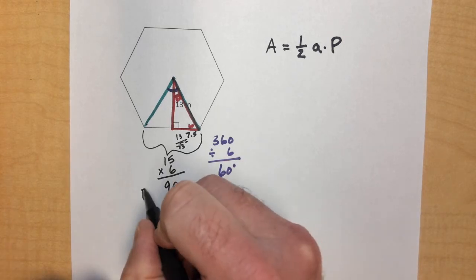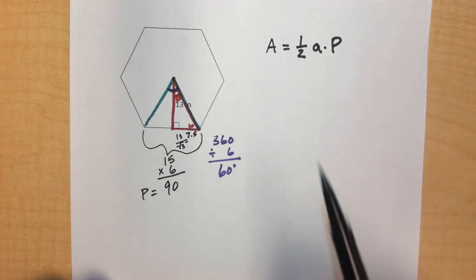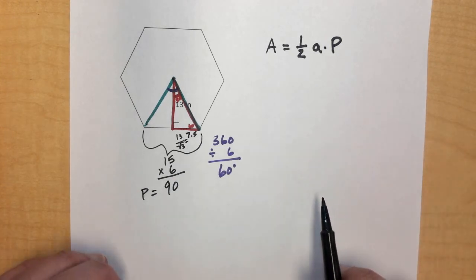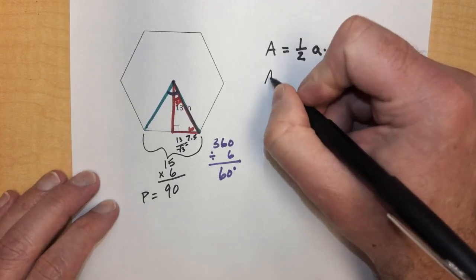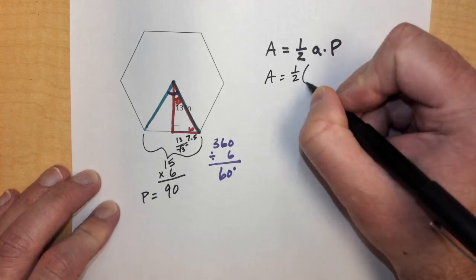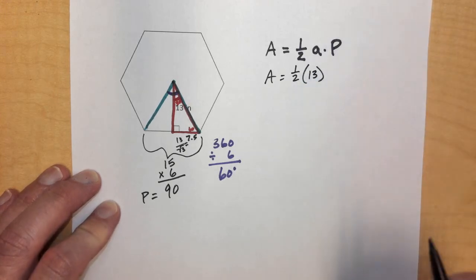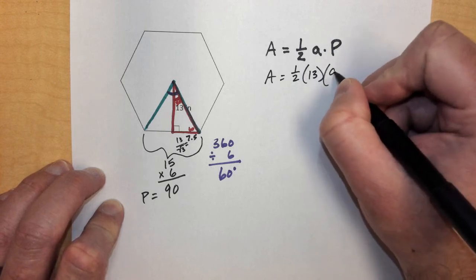So we found the perimeter. We know the apothem. Now we can plug all those numbers into our formula and we can solve for the area of this hexagon. So if we rewrite our formula, given the information we have, 1 half times the apothem, which in this case is 13 inches, the perimeter, which in this case is 90.